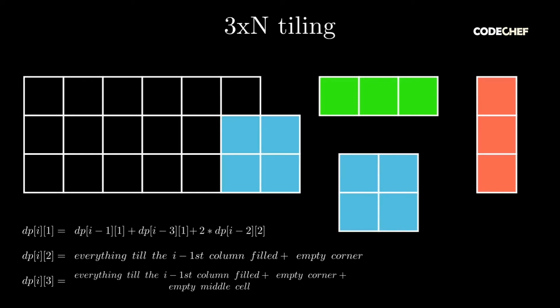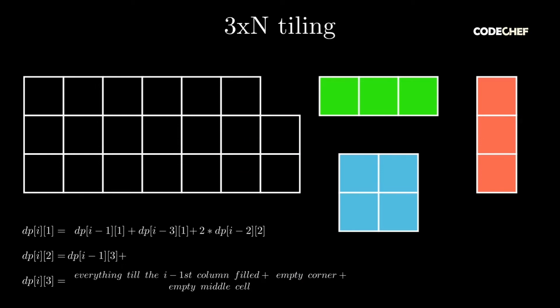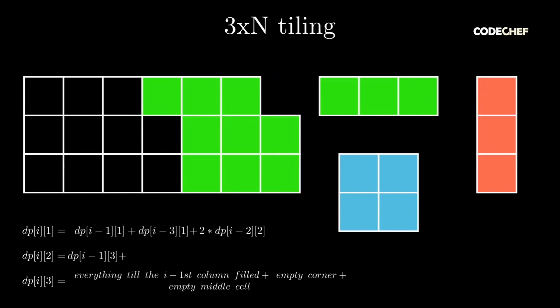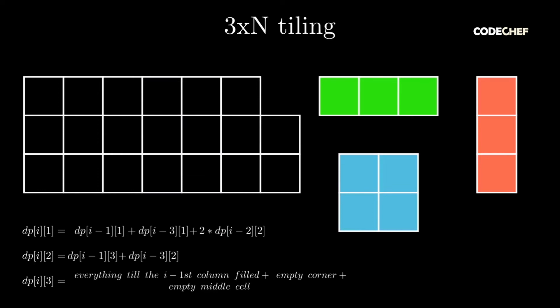Let's figure out dp of i of 2. We can place a 2 times 2 tile which completely covers two rows in the i-th column and the i-1st column, ending up with a corner piece to fill in the i-1st column. This is equivalent to dp of i-1 of 3. Alternatively, if we use two 1 times 3 tiles to fill the last column, we are forced to place another 1 times 3 tile, filling all available cells from i-2 to i. This requires dp of i-3 of 2 ways. Hence, dp of i of 2 equals dp of i-1 of 3 plus dp of i-3 of 2.